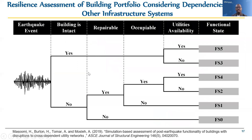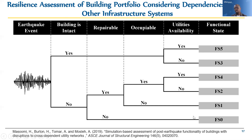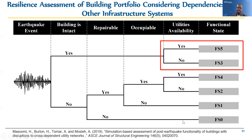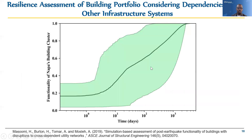There are various ways to incorporate those dependencies, and the approach we chose is an event-tree-based method. Starting from the left, you ask: what's the state of the building — is it repairable, is it occupiable? Assuming it's occupiable, you then ask questions about the availability of utilities — both water and power. Based on the availability of utilities combined with the physical state of the building, you can define a functional state for the building. Incorporating that within the end-to-end simulation framework, you end up with a restoration curve where the vertical axis measures building functionality accounting for reliance on water and power.